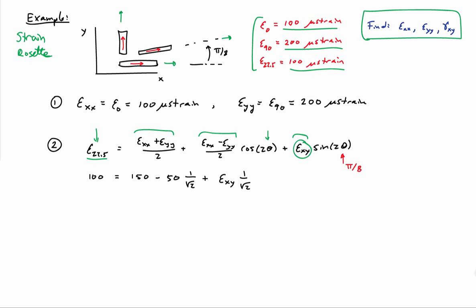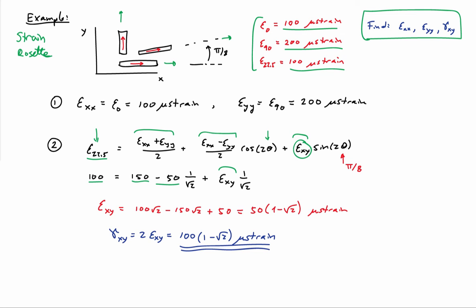Plugging in π/8 (22.5 degrees) for the angle: the normal strain at 22.5 degrees is 100, the mean normal strain is 150, and the difference divided by two is −50. The only unknown is epsilon xy. Solving for epsilon xy gives 50 times (1 − √2) microstrain. The engineering shear strain is twice the tensorial shear strain, giving 100 times (1 − √2), which is a negative number.